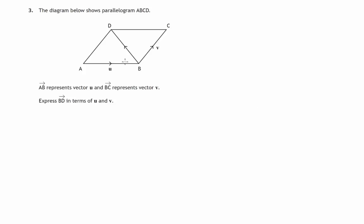Here we have a diagram of a parallelogram A, B, C, D. Remember in a parallelogram opposite sides are equal and parallel. So AB and DC equal lengths and they're parallel. The same goes for AD and BC, equal lengths and parallel.